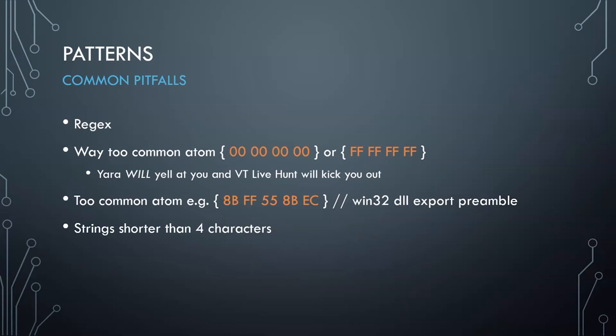Another issue is common atoms that don't necessarily get caught by the YARA compiler but are still very common depending on the files you're operating against. A less obvious example is the 32-bit preamble for literally every function exported by a Win32 DLL on Windows — which was put there to allow hot patching — so every exported function will match this five-byte hex string.